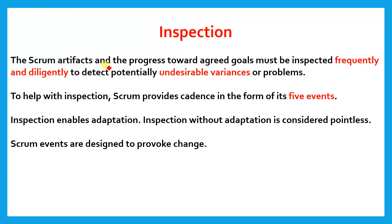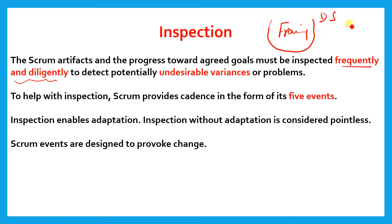The second pillar is inspection. The Scrum artifacts and the progress toward agreed goals must be inspected frequently and diligently. Whatever we do in a sprint we have to check — that is why we do Daily Scrum. In the Daily Scrum we check whether we are proceeding toward our Sprint Goal. The Product Goal we check once a week or once a month, but the Sprint Goal we check daily. We do this to detect potentially undesirable variances or problems, and the Scrum team must resolve them as soon as possible to avoid further deviation.